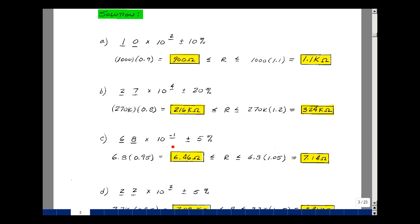which would be 6.8 ohms, and then a 5 percent tolerance because we're going to multiply that by 0.95 and 1.05. Our resistance will be between 6.46 ohms and 7.14 ohms.